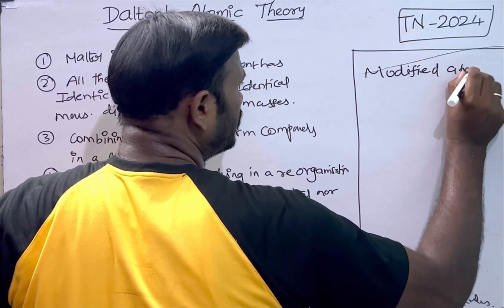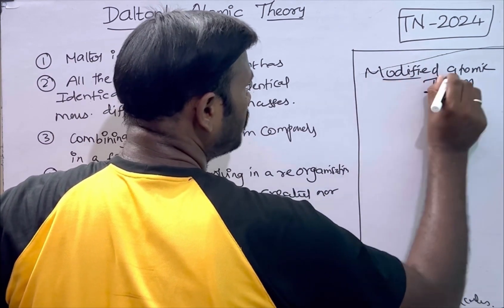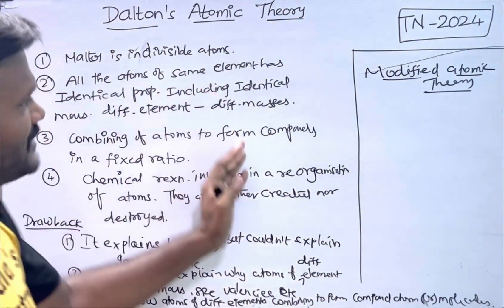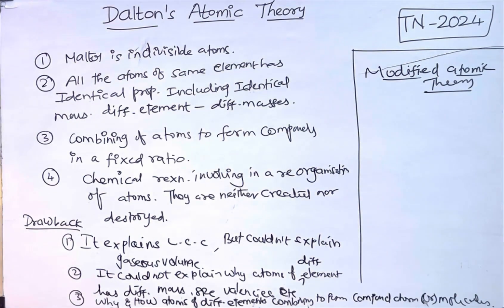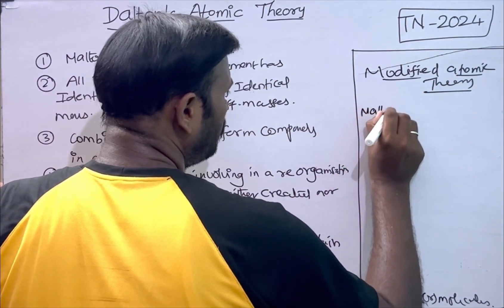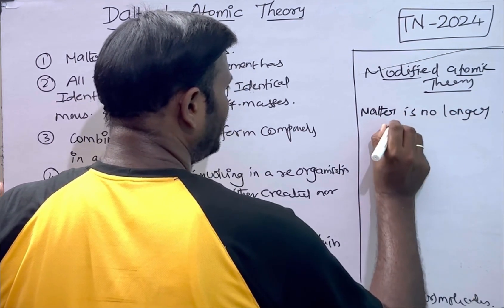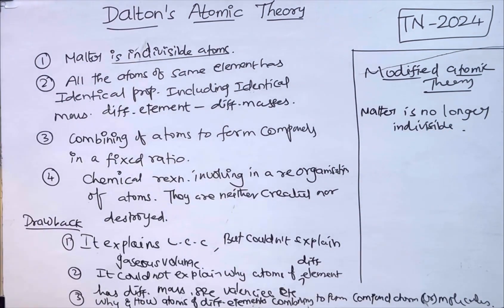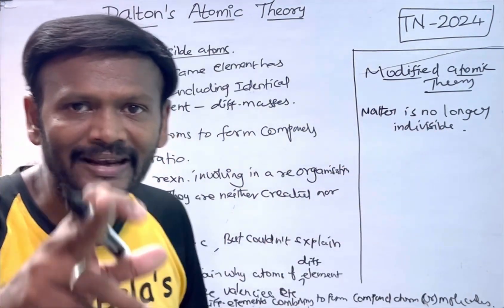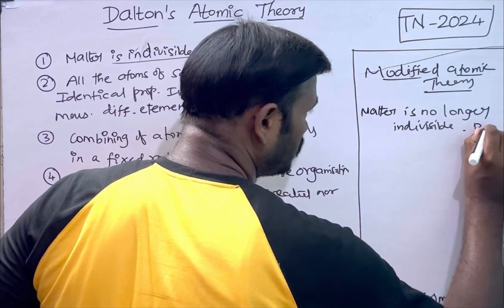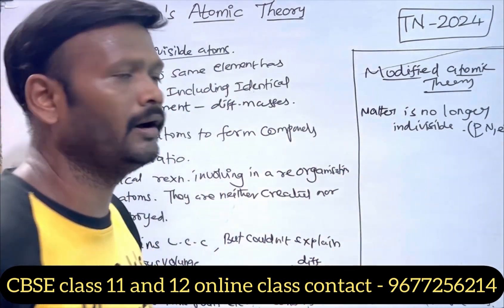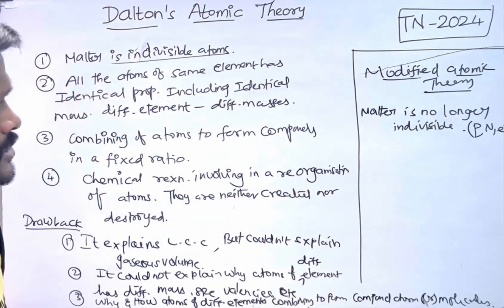Modified atomic theory states: matter is no longer indivisible, because it contains particles called protons, neutrons, and electrons. Atoms are not simple — they are complex structures. So the first concept of Dalton's theory — matter is indivisible — is overturned.